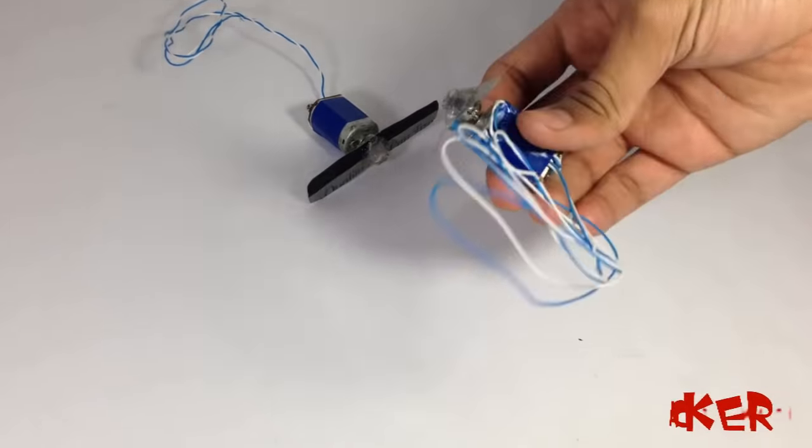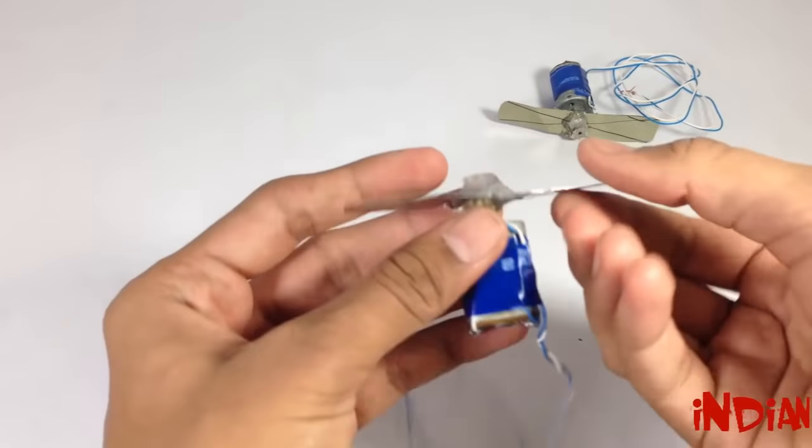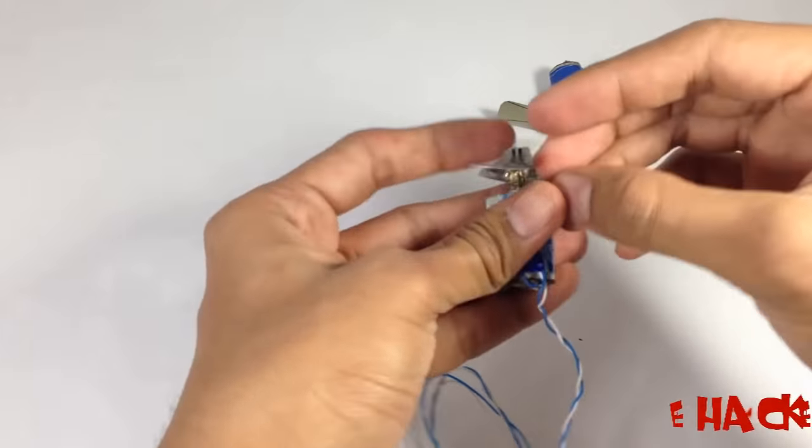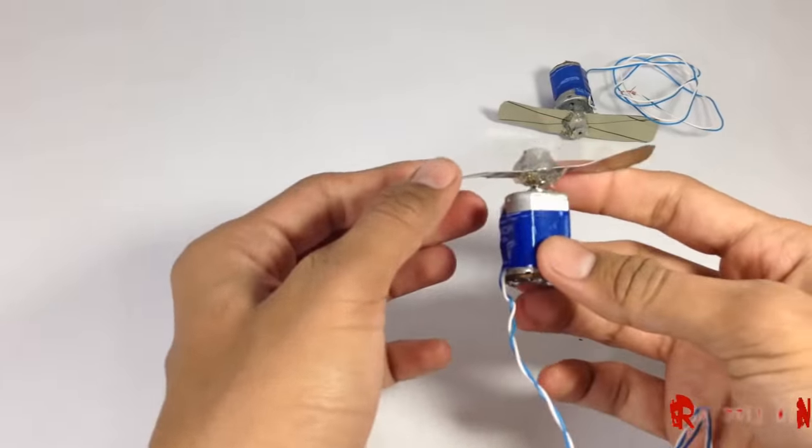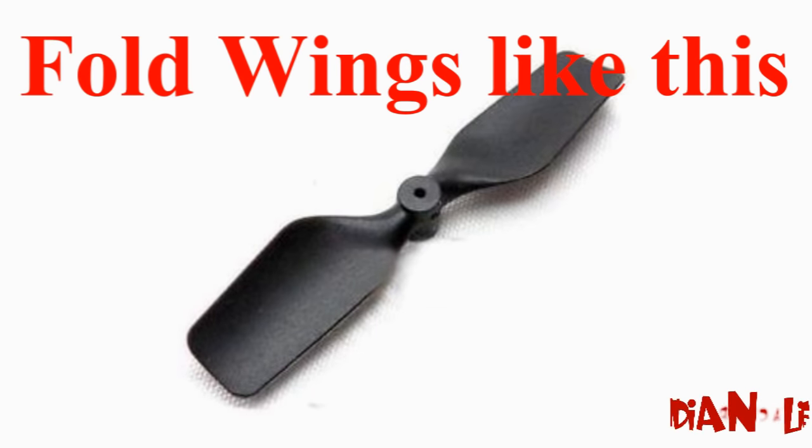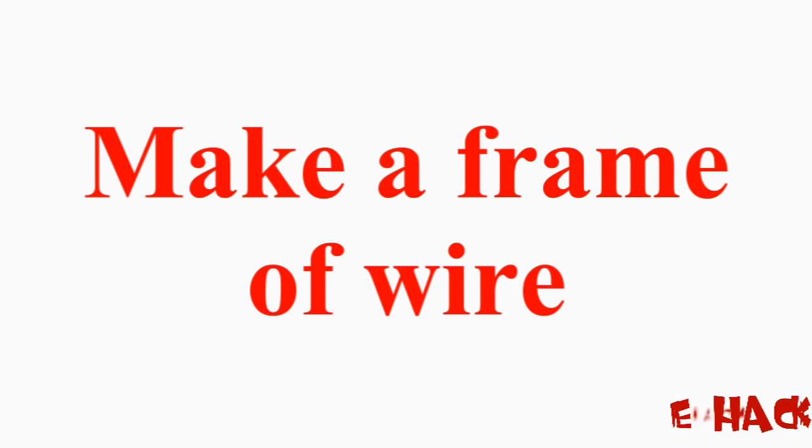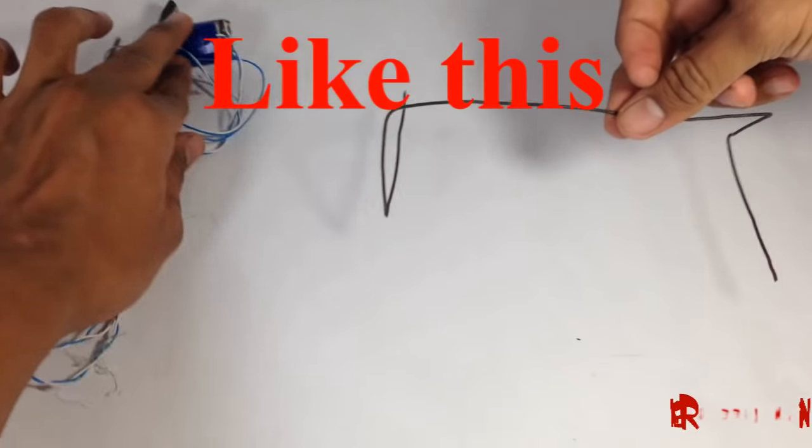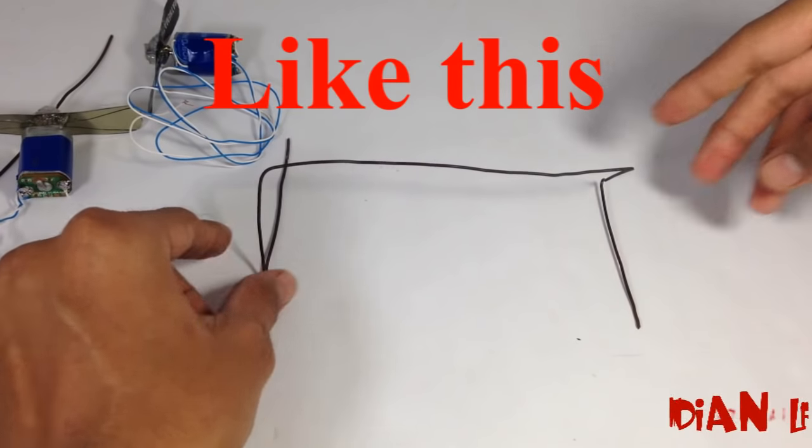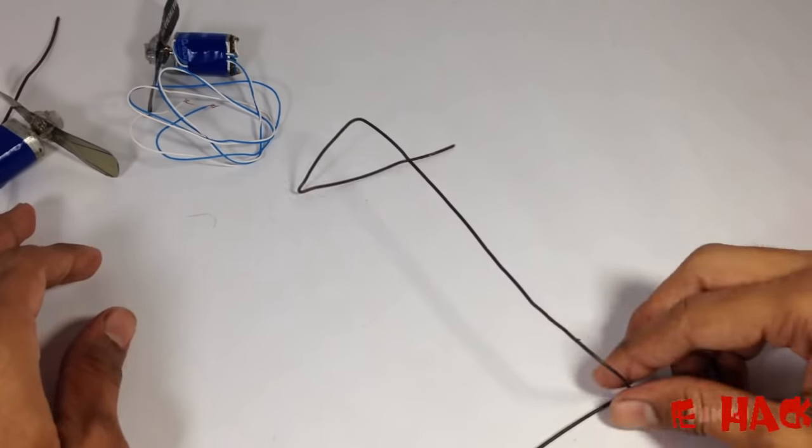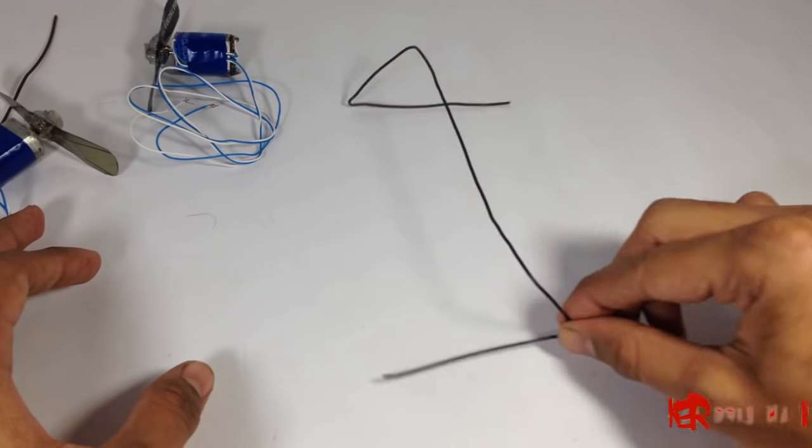Now our wings and motor are ready. We need to give a shape to the wings like this. Now we need to make a frame to fix our motor. So this is a frame made with wire which is lightweight so the helicopter can carry it.